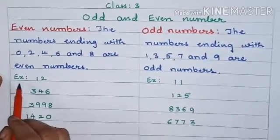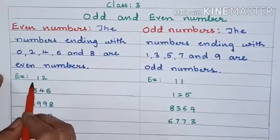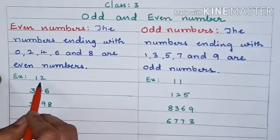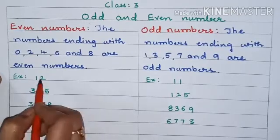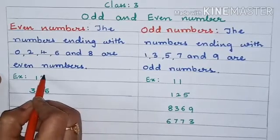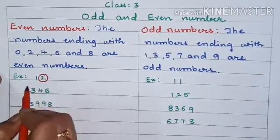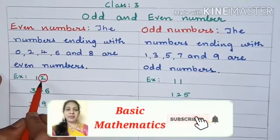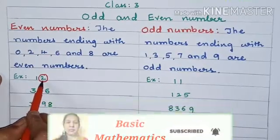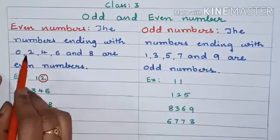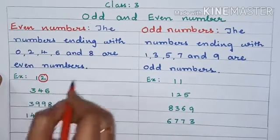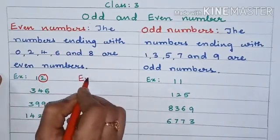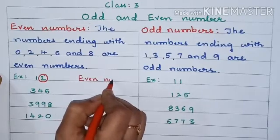We will understand with an example. See children, I have taken here 12. So this number is 12. Let us find out the last digit which is in the 1's place. So what is this last digit? 2. So 2 is an even number. So this 12 is an even number.